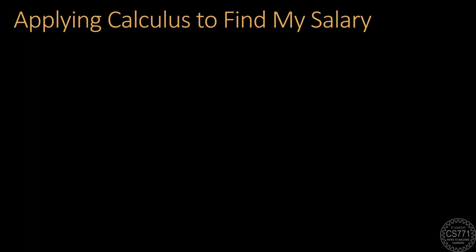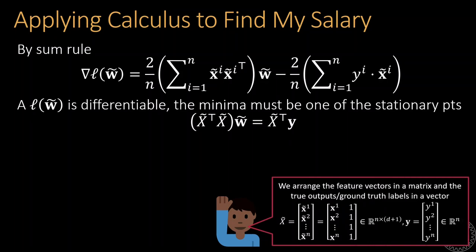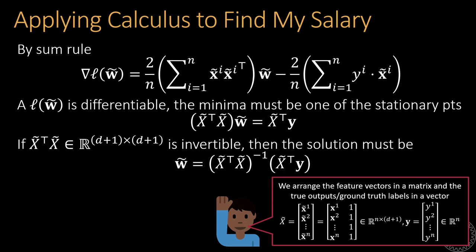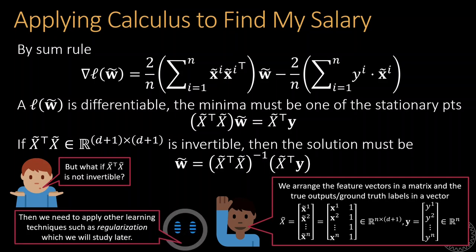Applying the sum rule then completes the gradient calculations, and if we adopt some helpful shorthand notation to simplify the expressions, we find that if W̃ is a stationary point, then it must satisfy X̃^T X̃ times W̃ equals X̃^T Y. Now, if X̃^T X̃ is invertible, then there is no problem and we readily obtain the optimal parameter values. However, if this matrix is non-invertible, then we need to use other techniques such as regularization which we will discuss shortly in another discussion.